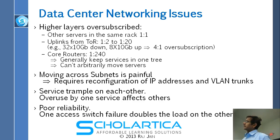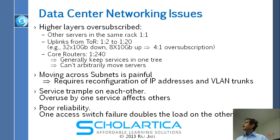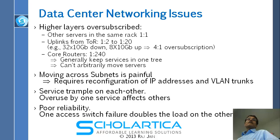For example, you might have 32 times 10 gigabit down, but only 8 times 10 gigabit up, which is 80 to 320 — a 4-to-1 over-subscription. Core routers are over-subscribed by 1 to 240, meaning 240 times more traffic can come in than can get out.